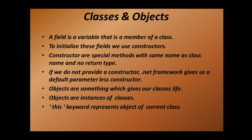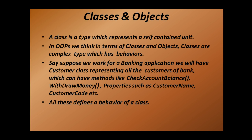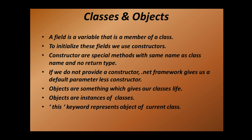Let's move back to the slides. A field is a variable that is a member of a class. To initialize these fields we use constructors — special methods with the same name as the class name and no return type. If we do not provide a constructor, the .NET framework gives us a default parameter-less constructor. Objects give our classes life — they are instances of classes. The 'this' keyword represents the object of the current class.